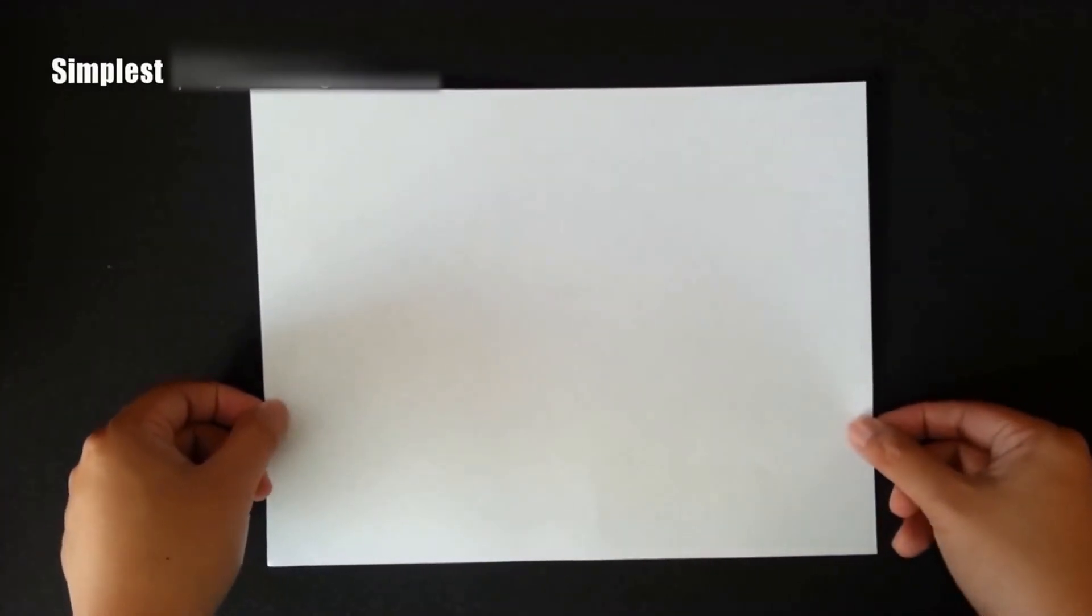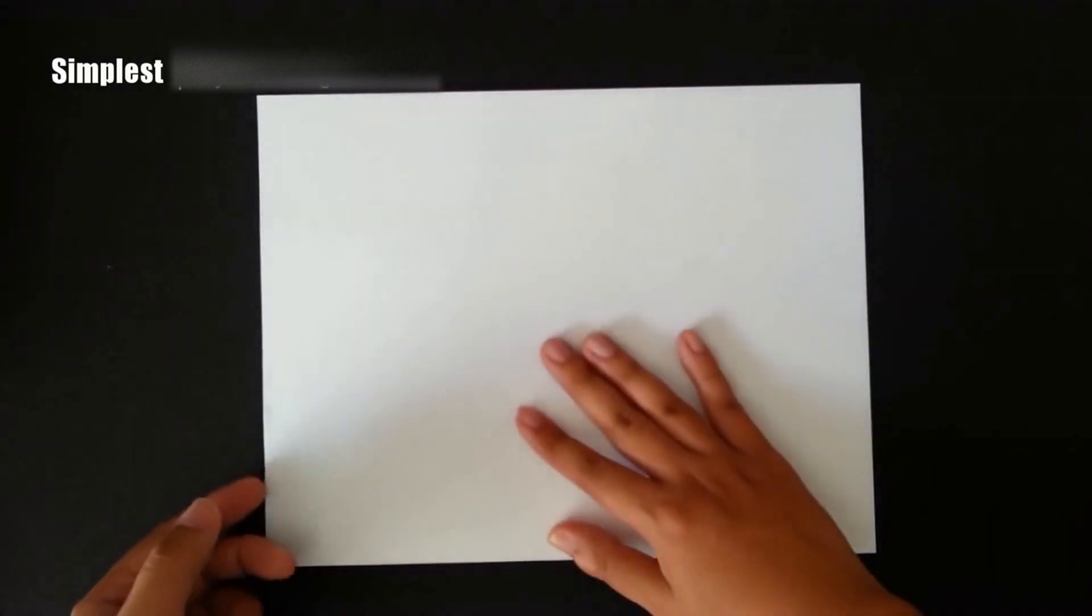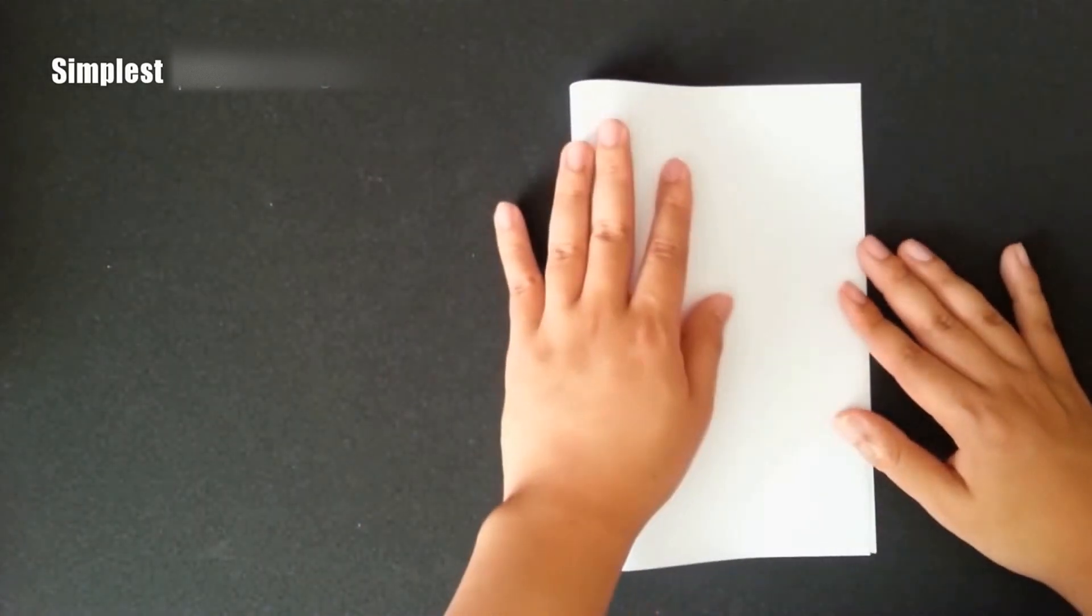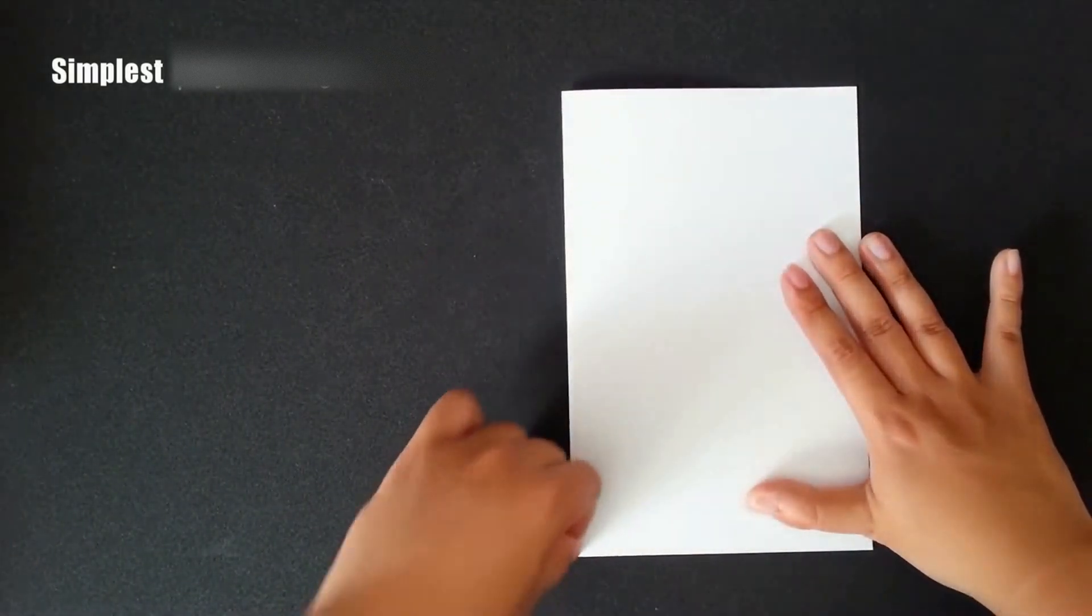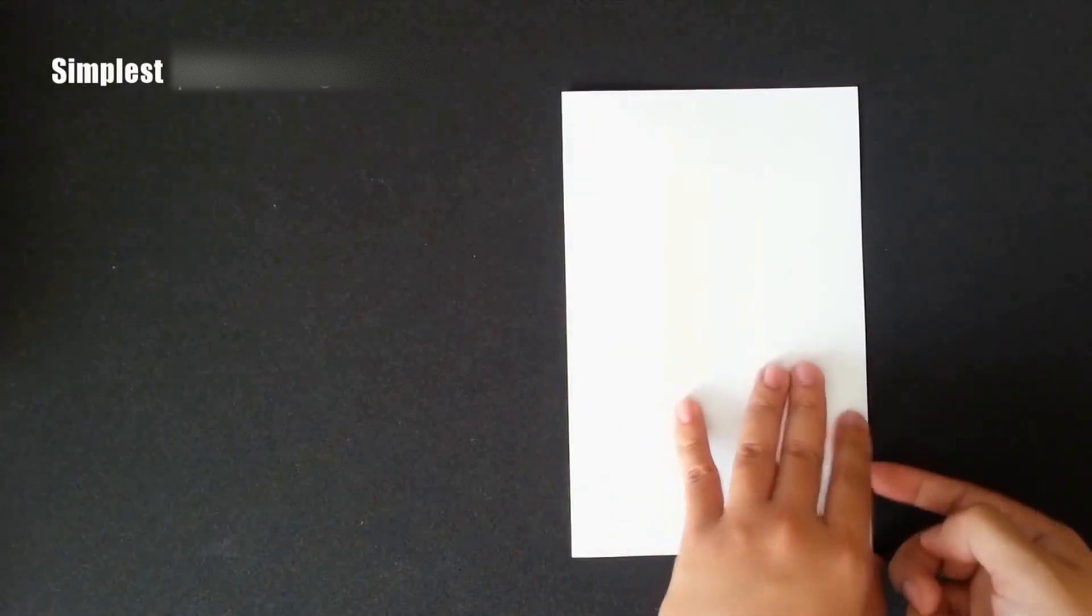Now, let's start. First step, fold the paper in half vertically. Unfold the paper.